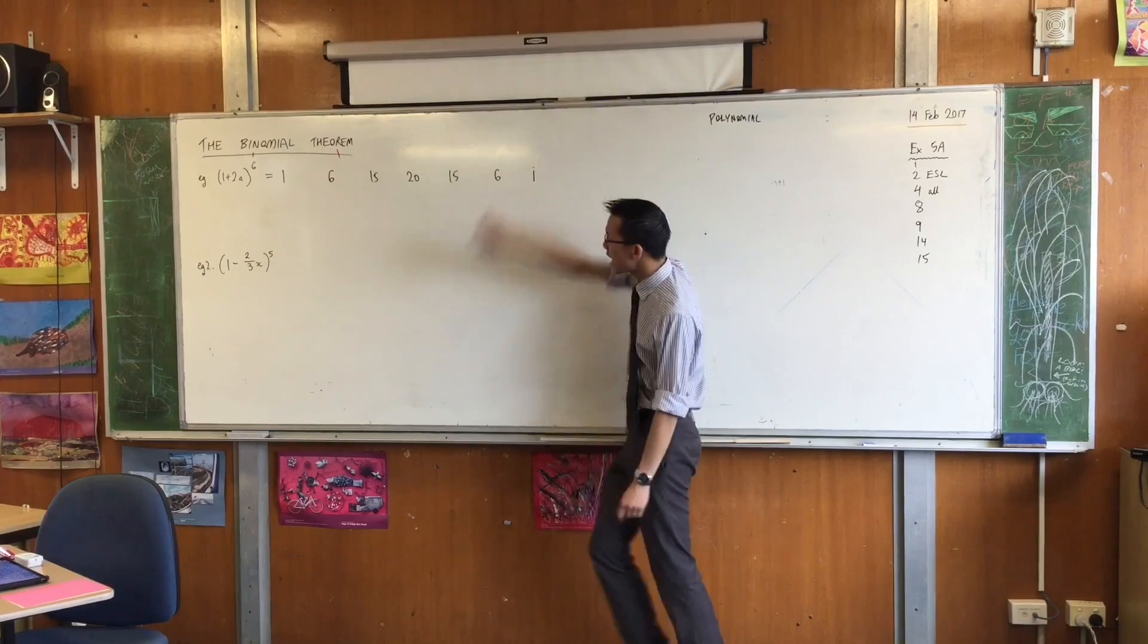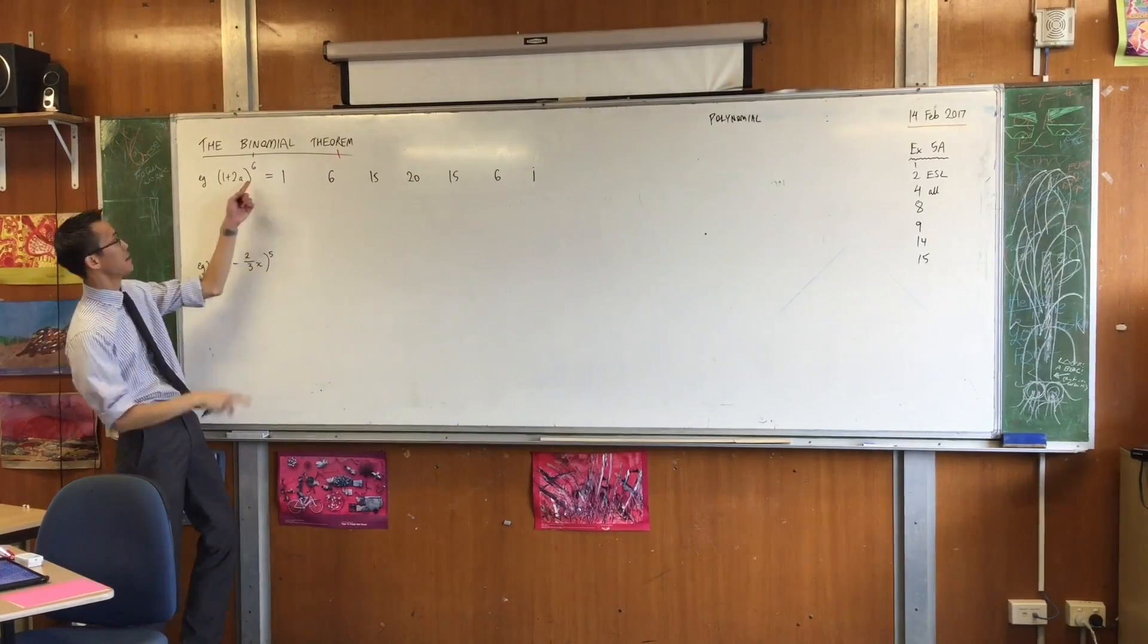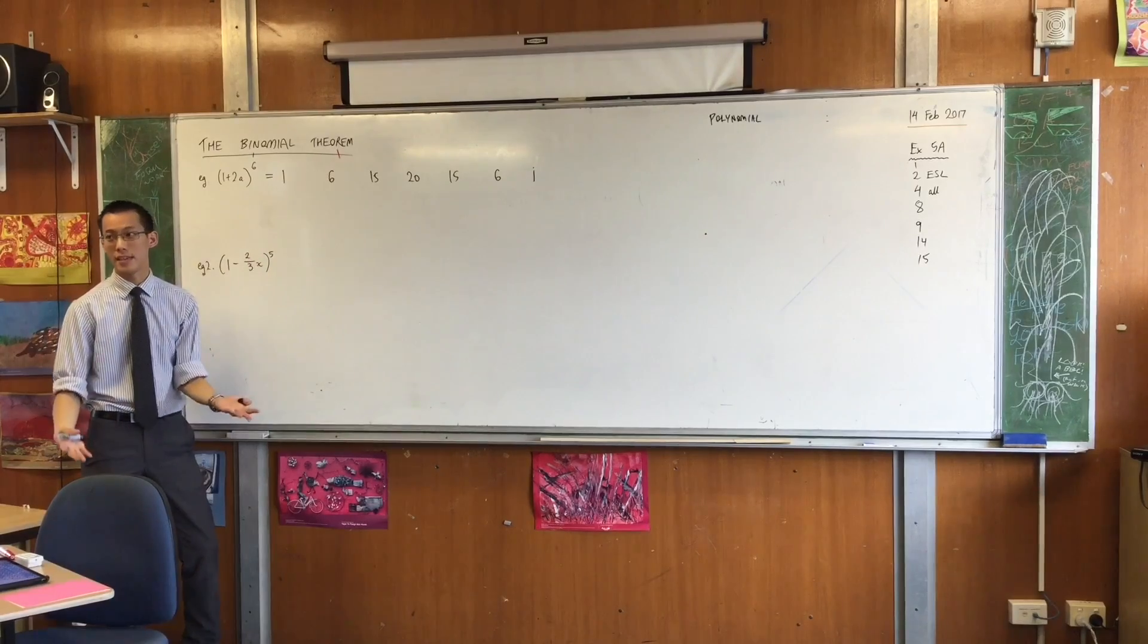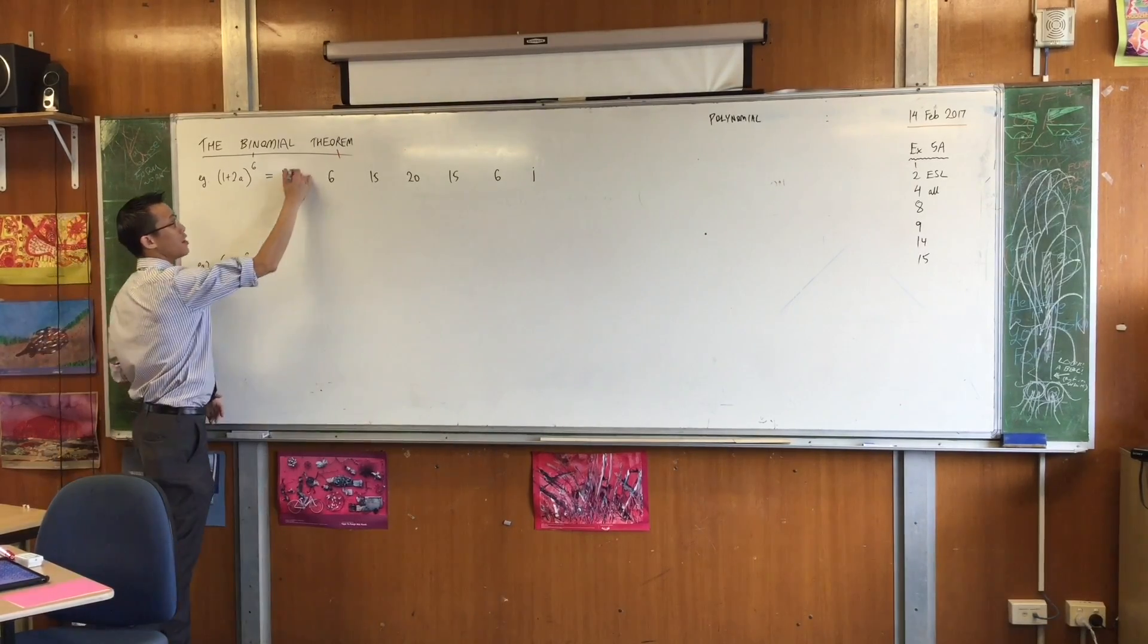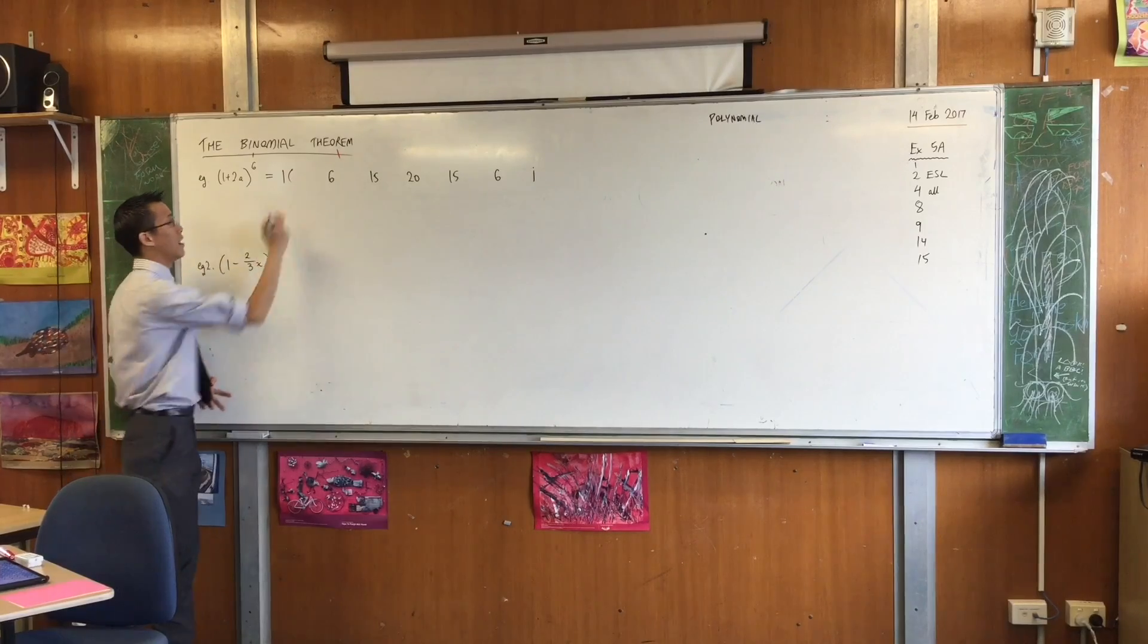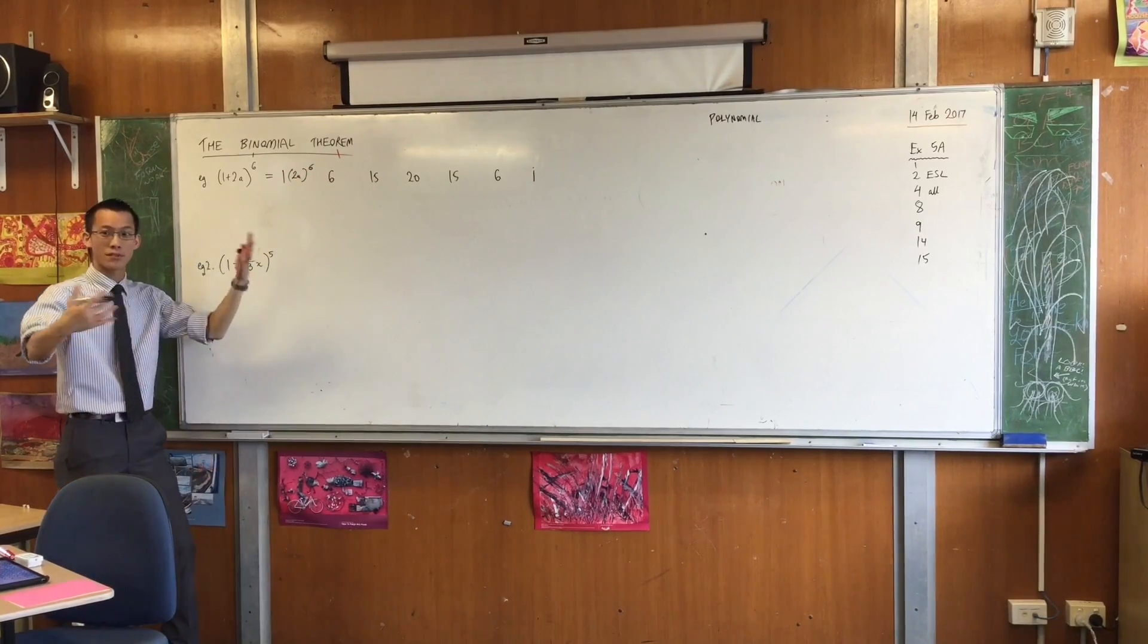So, what's going to happen next? Well, we used to have like x cubed. That was like the first term. Or in this case, it would be x to the 6. We don't have an x there. We have a 2a. So, therefore, the first term, I'm going to label it as 2a to the 6. So, that's the most of the 2a's that I've got.